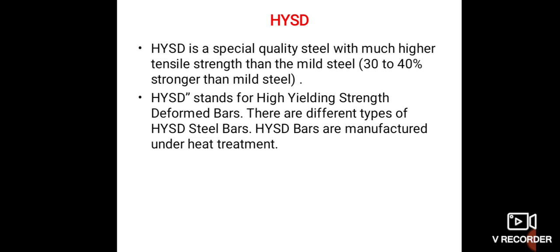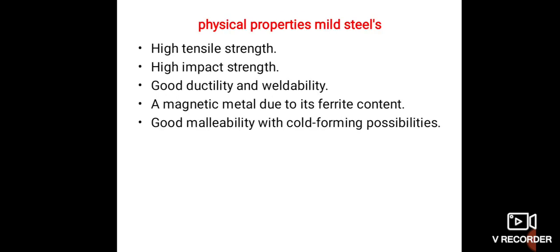अब students, बात करते हैं physical properties of mild steel की। इसकी physical properties हैं: high tensile strength, high impact strength, good ductility and weldability। It is a magnetic metal due to its ferrite content, and it has good malleability with cold forming possibility।